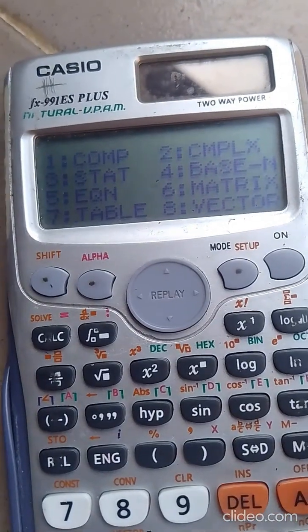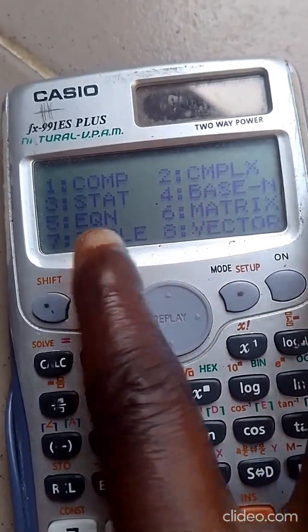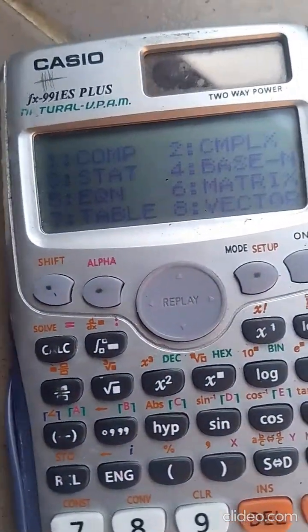Now we want to use it to compute p-value. Just press MODE. Once you press MODE, you will see 1 for compare, 2 for complex, and 3 for STAT. Just press that 3.